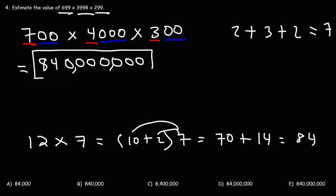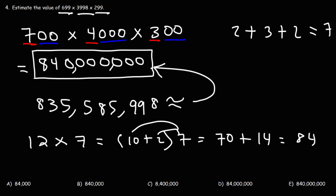So, the answer is approximately 840 million. And we could check it. If we were to multiply 699 by 3,998 times 299, the exact answer is 835,585,998, which is approximately 840,000. So, therefore, answer choice E is the correct answer.